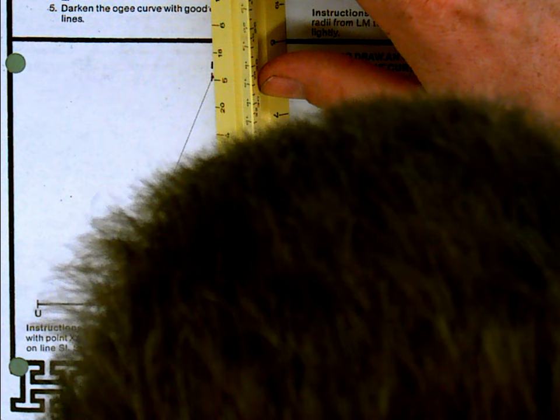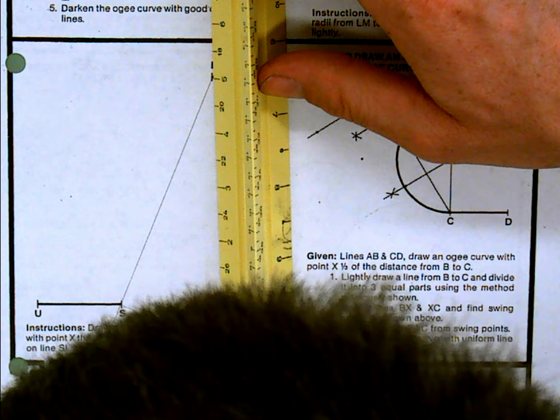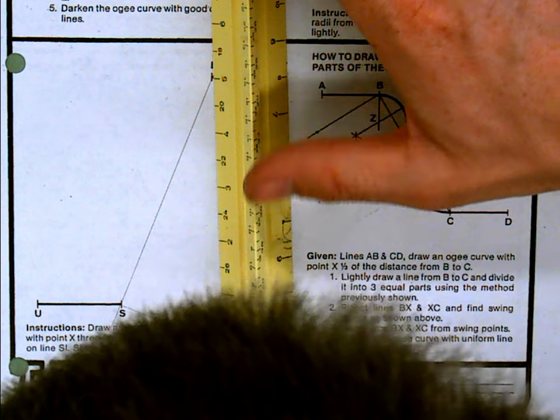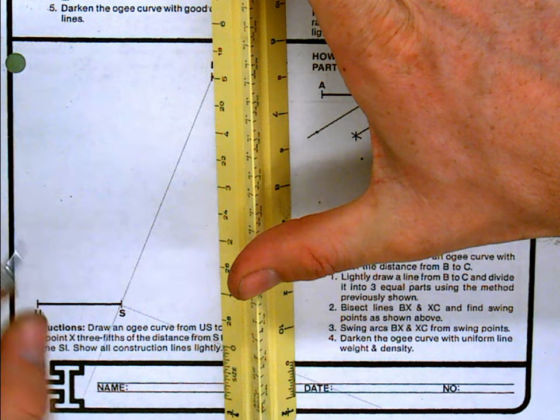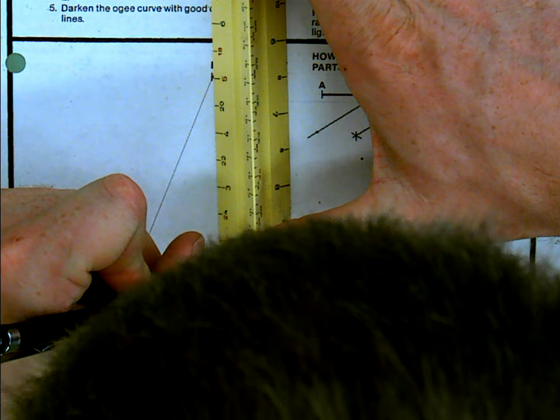If I get this scale just right. Okay, that's pretty good right there. So I'm going to go ahead and mark those five divisions.